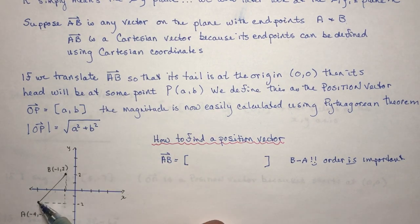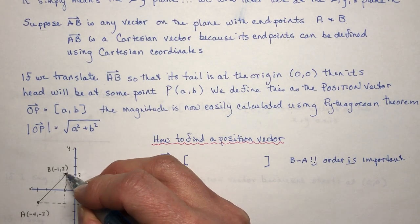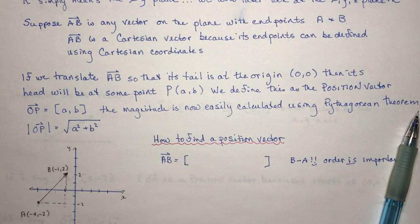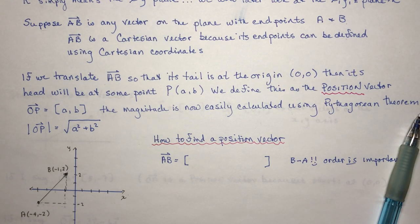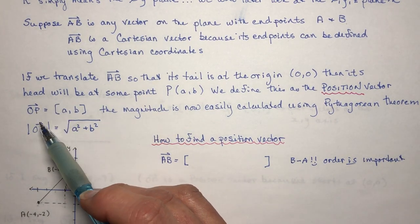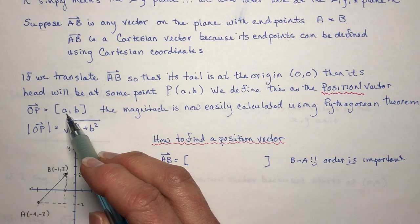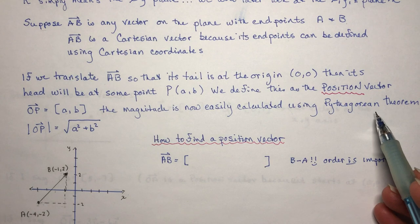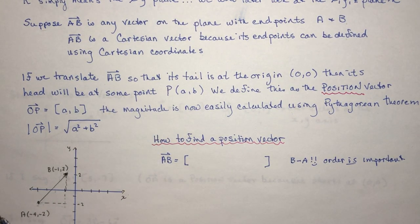So if we translate vector AB so that its tail is at the origin, then we call it a position vector. And this is something that you're going to do a lot of. You want to find position vectors because it makes some of the other calculations much easier. So we would call that OP, and it would have coordinates AB, and so it would be OP vector is AB. And then you can find the magnitude very easily by just taking the square root of the sum of the squares using Pythagorean theorem.